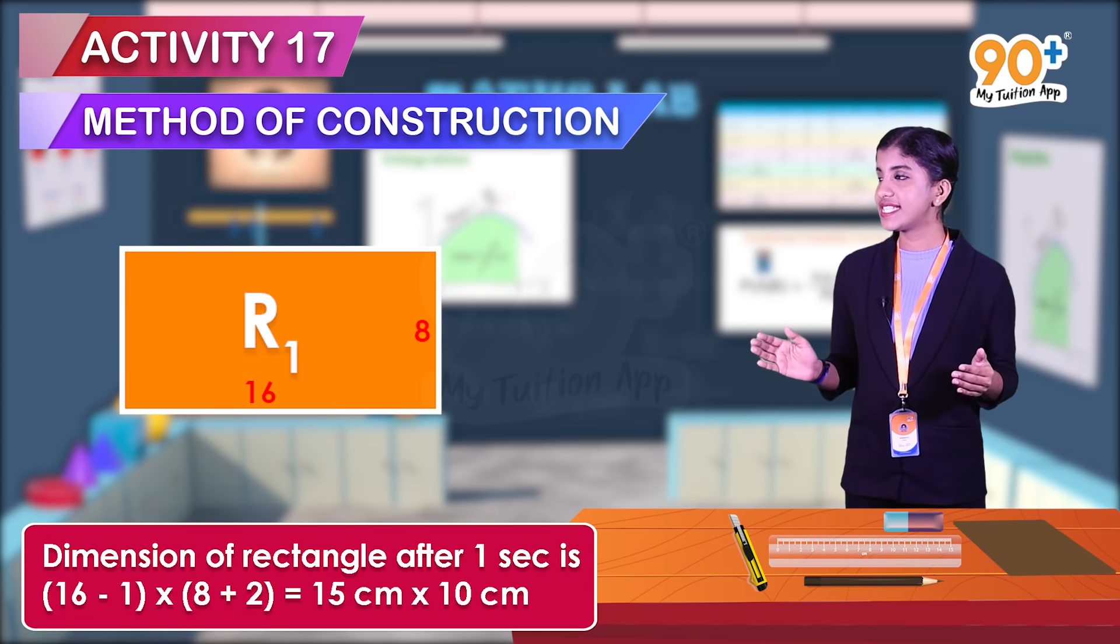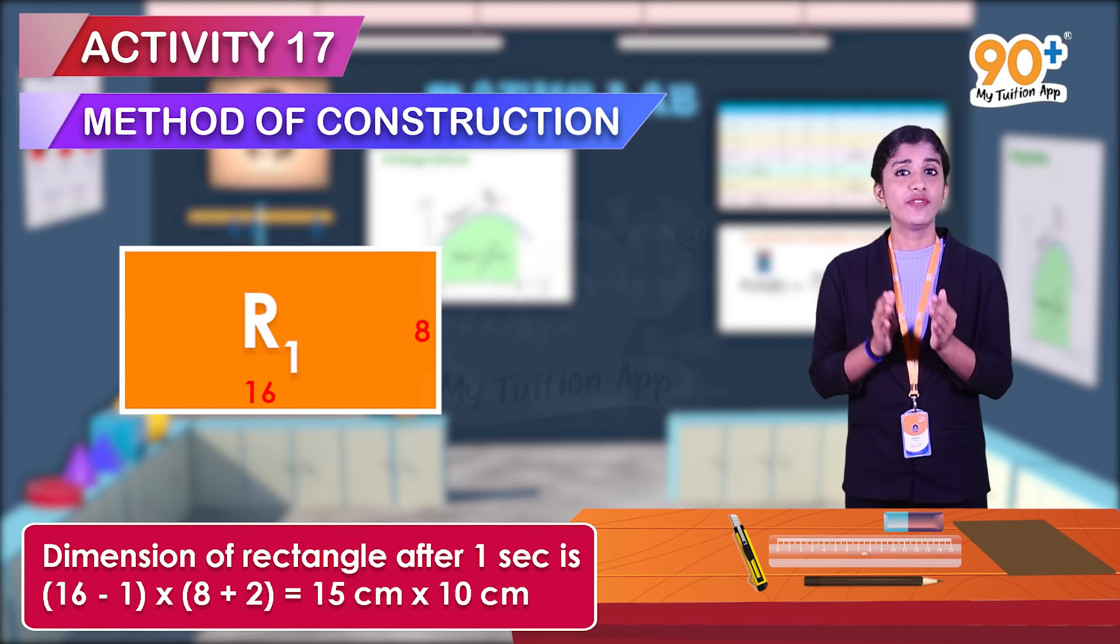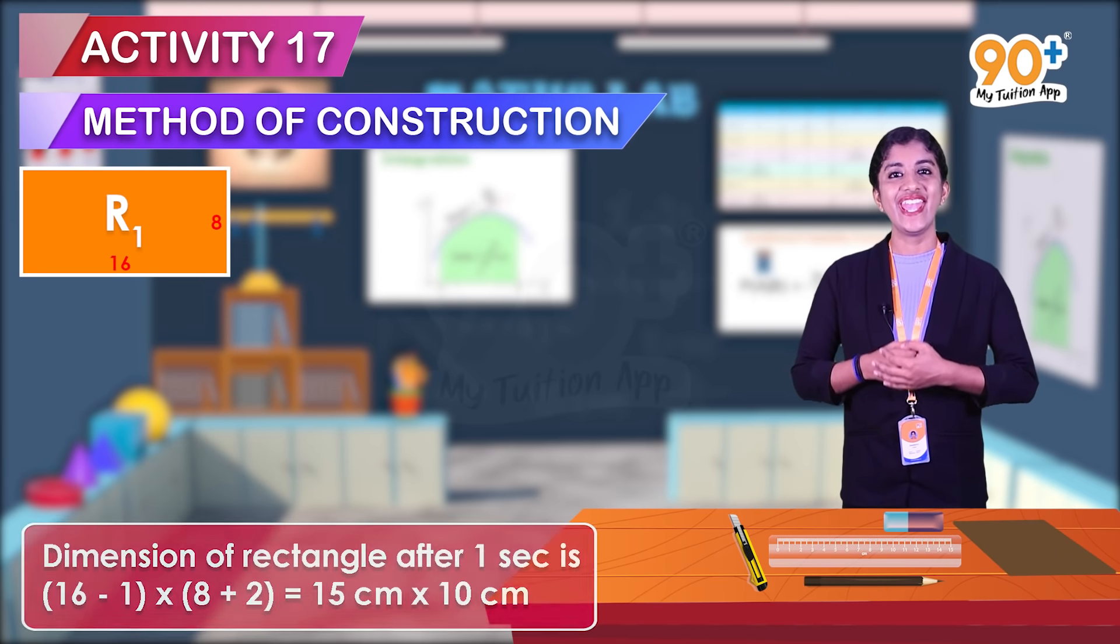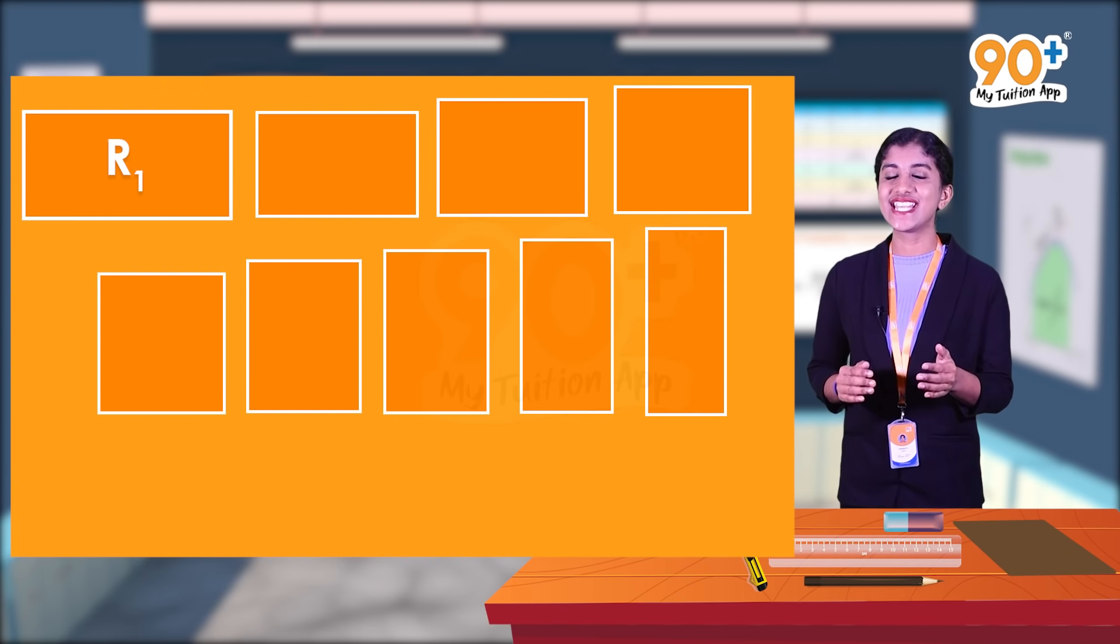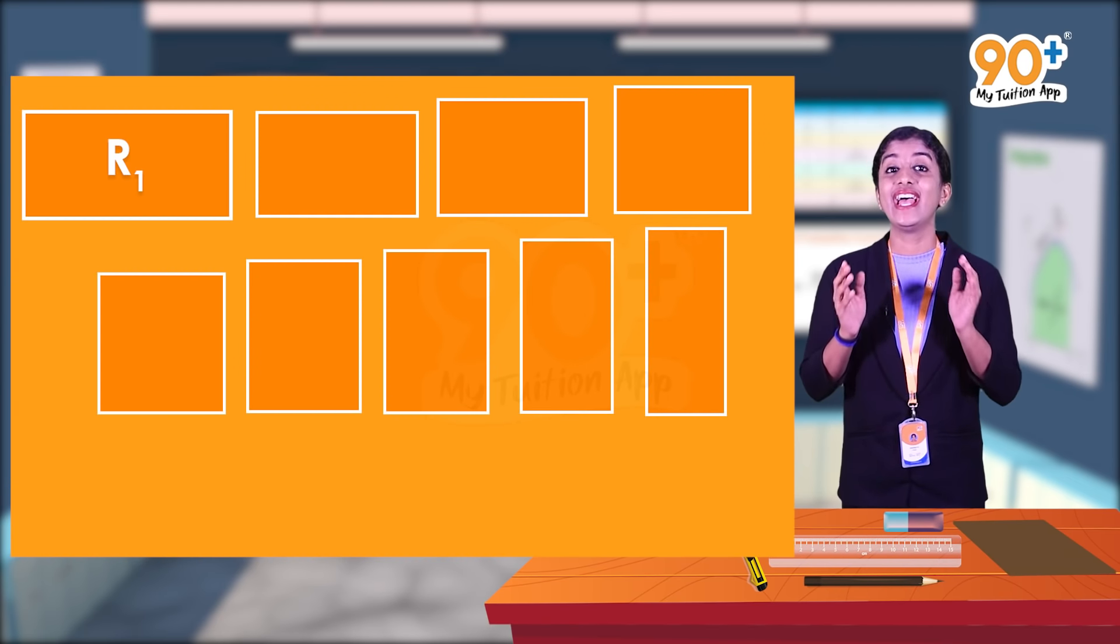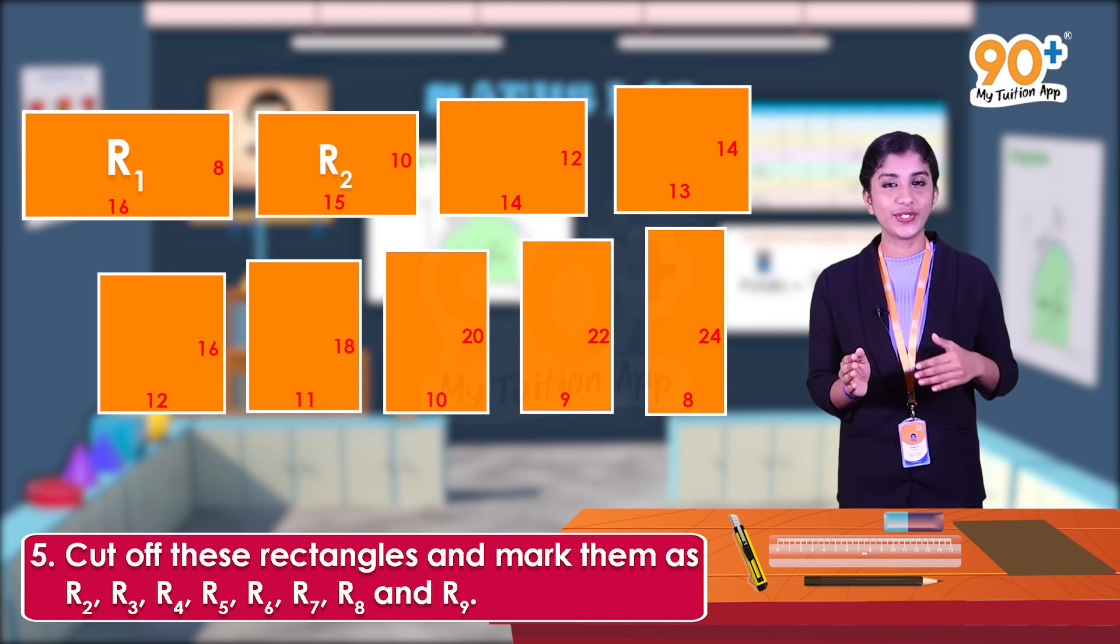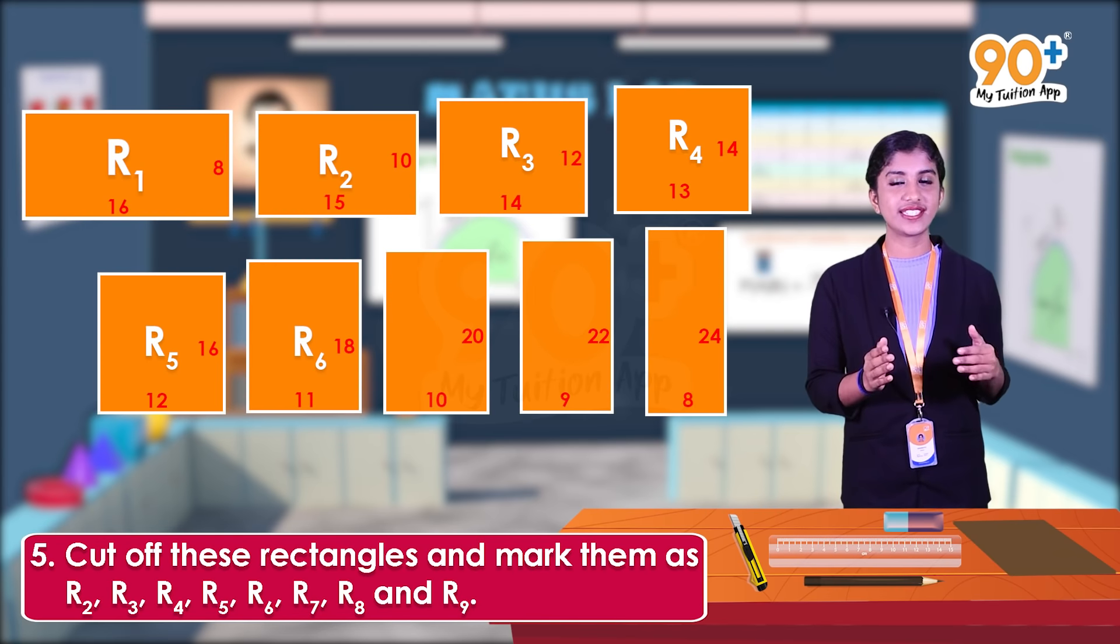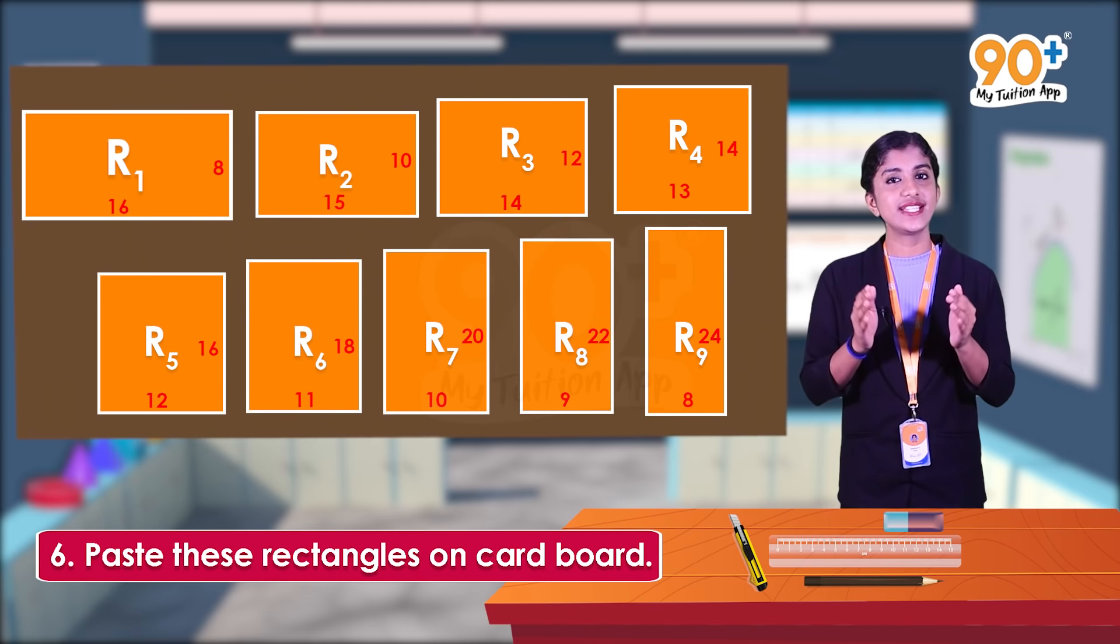Now let us draw rectangles and mark them as r2, r3, r4, r5, r6, r7, r8, and r9. Then paste these rectangles on cardboard.